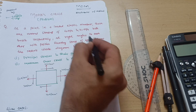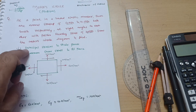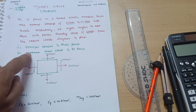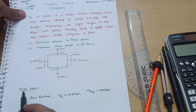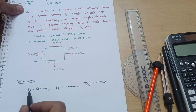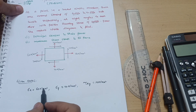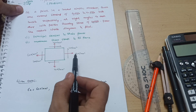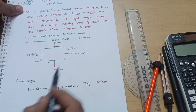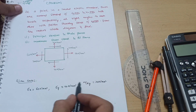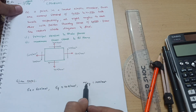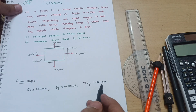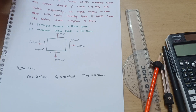Let me find out these terms: principal stresses and their planes, and maximum shear stress and its plane. To calculate these values we have to draw the Mohr's circle diagram. First, write down the given data: sigma x = 60 N/mm², sigma y = 40 N/mm², and shear stress tau xy = 20 N/mm² on both sides.